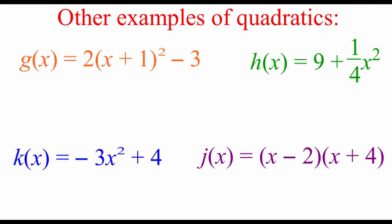On the screen now there's a bunch of different examples of what quadratics could look like. We've got a function g of x where it's 2 times x plus 1 squared minus 3 — we're actually going to focus on that form in just a little bit. This is what's called standard form of a quadratic. But all of these things on our screen represent different forms of quadratics since they all have that x squared, second degree polynomial look to them.